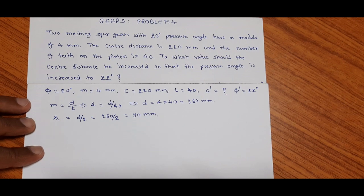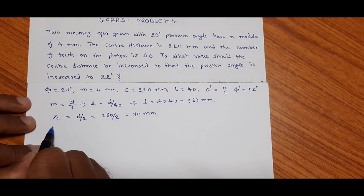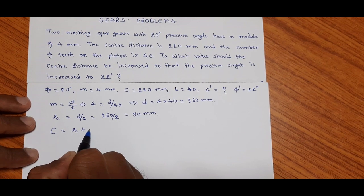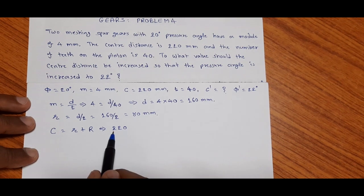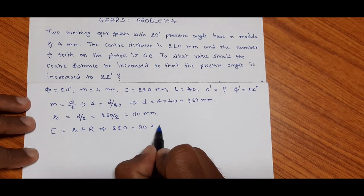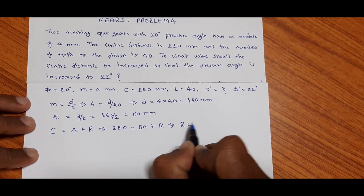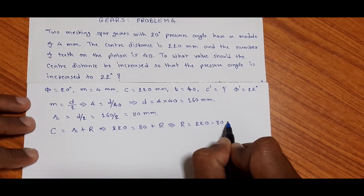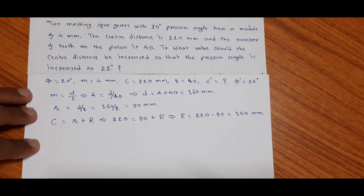Now, the center distance between the two gears is 220 millimeter. Let us denote the pitch radius of the gear as capital R. The center distance c equals the pitch radius of the pinion plus the pitch radius of the gear, so 220 = 80 + R, which gives capital R = 220 − 80 = 140 millimeter.